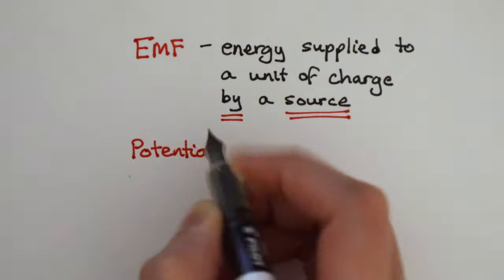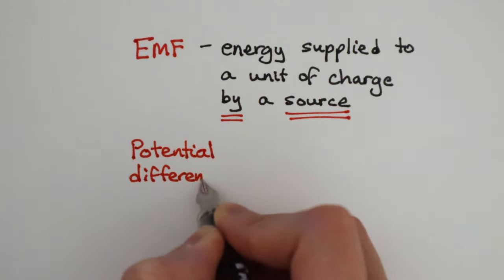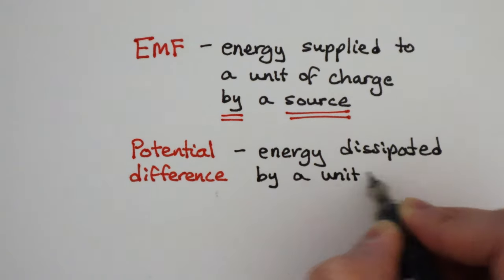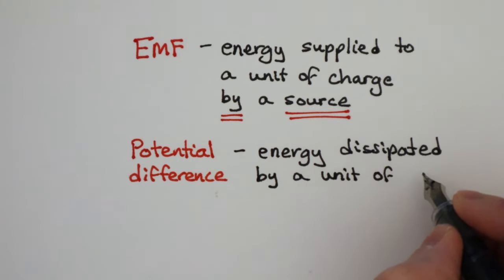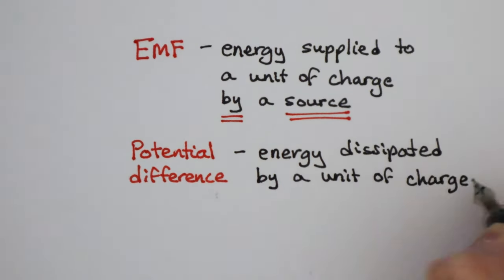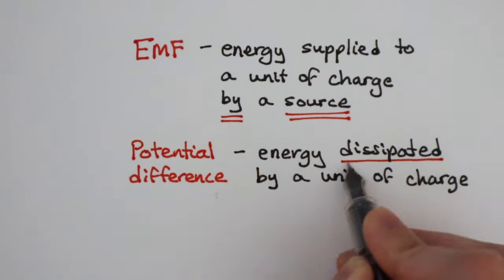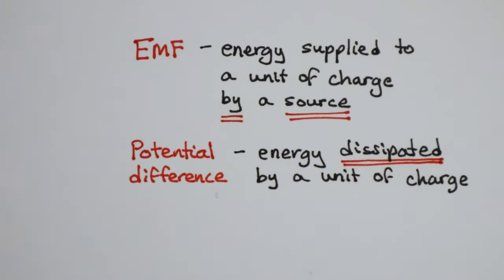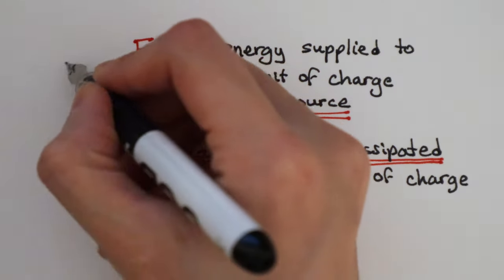But when we refer to potential difference, that's the energy dissipated by units of charge when it goes through a component. So the process of energy transfer here is from electrical energy to other types of energy.